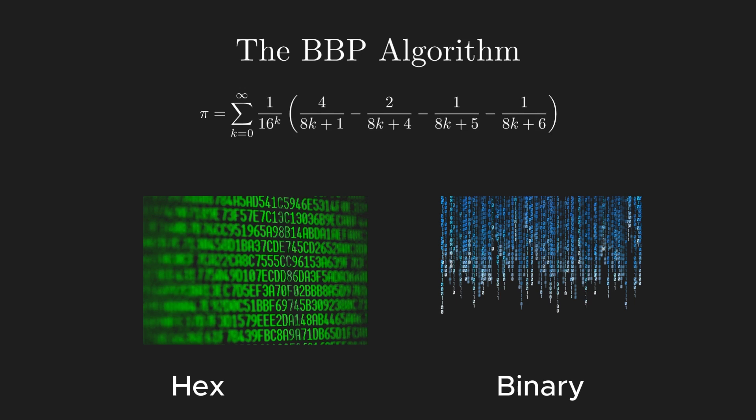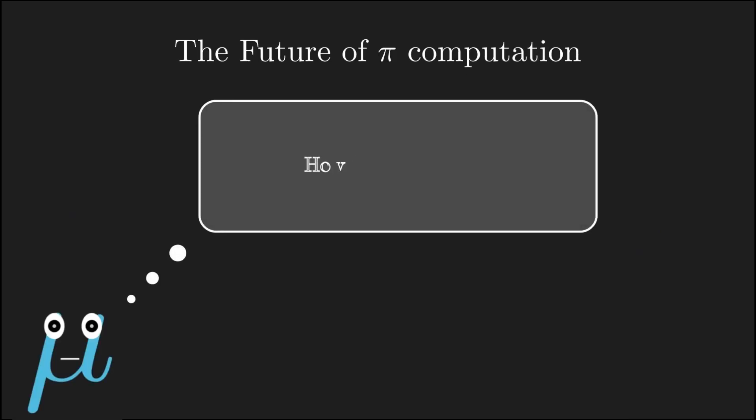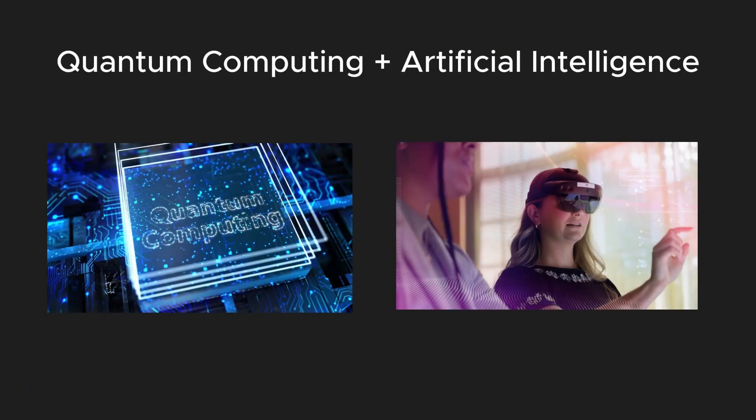We still don't have an efficient way to compute individual decimal digits of Pi. Today, Pi has been computed to over 100 trillion digits, but how far can we go? With the rise of quantum computing, it's possible that maybe one day we compute Pi as it appears unimaginable today. Even AI is starting to play a role in Pi computations.